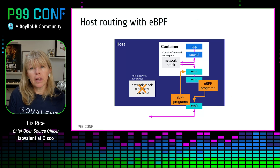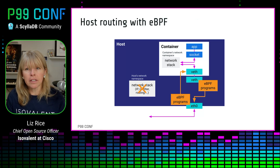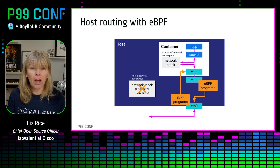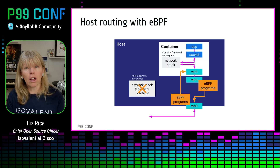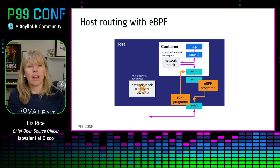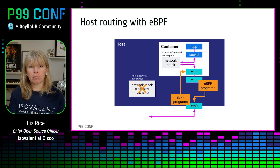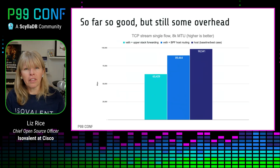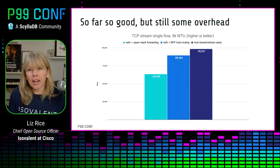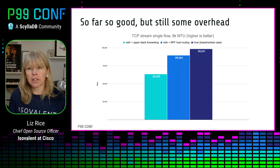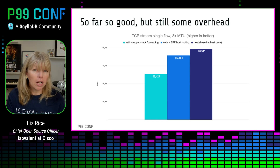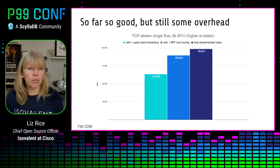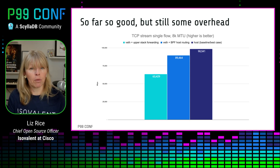So if we combine the picture for both ingress and egress, you can see that we're bypassing the upper network stack on the host by doing all that host routing in eBPF programs. This significantly improves the performance — we're now getting about 90 gigabits, as you can see in that middle bar in the chart. So we're getting much closer to the baseline host network performance.